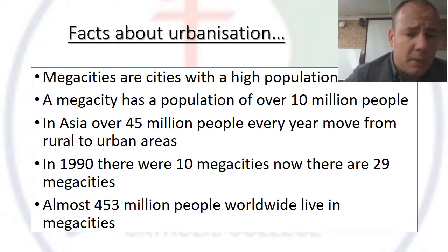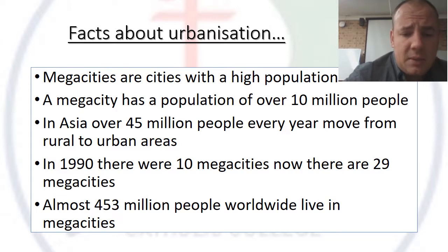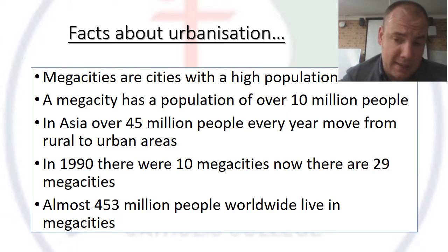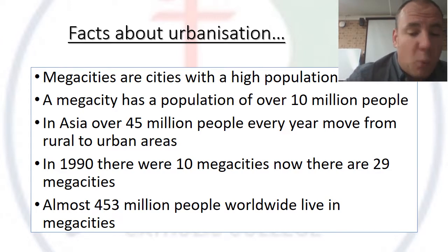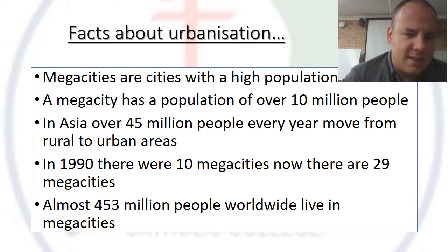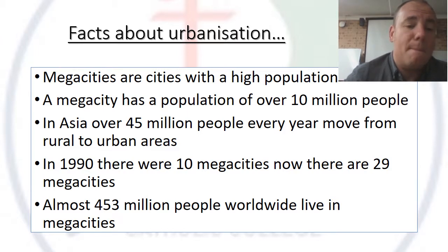In Asia, over 45 million people every year move from rural to urban areas — that's almost double the population of Australia moving every single year. In 1990 there were 10 mega cities; now there are over 29, and approximately 453 million people worldwide live in mega cities.